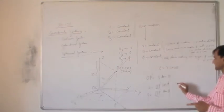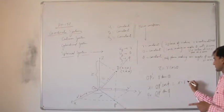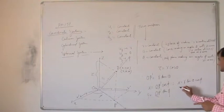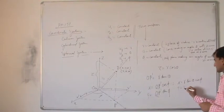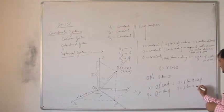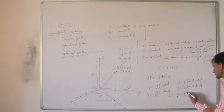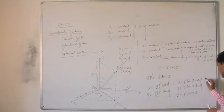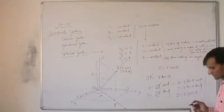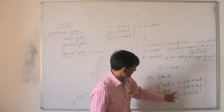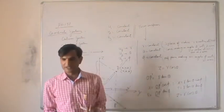Substituting the value of O-P-prime, this becomes: X equals R sin theta cos phi, Y equals R sin theta sin phi, and Z equals R cos theta. These are the three forward transformation relations. If you know R, theta, phi, you can calculate X, Y, and Z.